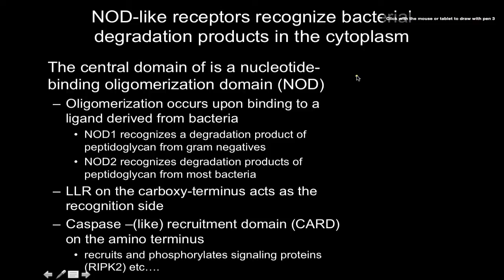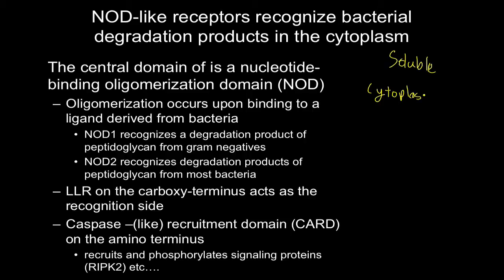There's another way that we can have detection of pathogens: through the use of NOD-like receptors. A way I like to think of these is that they are basically soluble cytoplasmic TLRs — think of these like TLRs in the cytoplasm. They're a little bit different, but structurally they're very closely related, and they're really good at recognizing bacterial degradation products inside the cytoplasm, so they know they've been exposed to the pathogen or its byproducts.